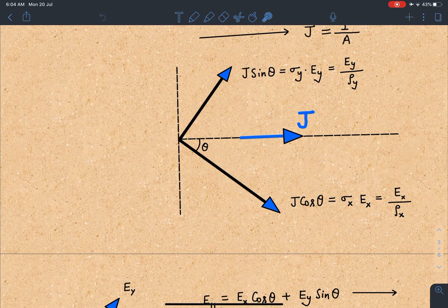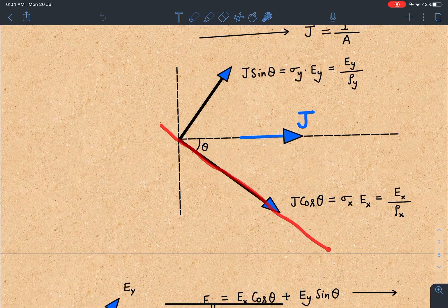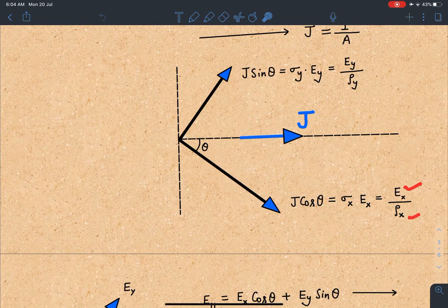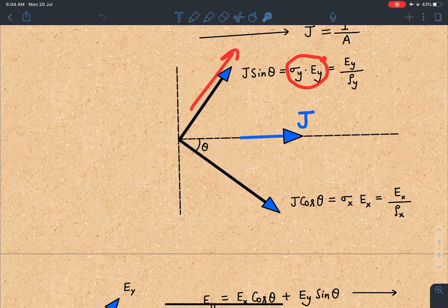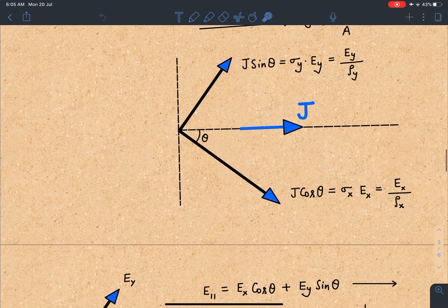Now that's where we can use our standard result J = σE. Since in this particular direction ρ is constant, I can still use that logic J = σE or E/ρ. So J cos θ = E_x/ρ_x, similarly I can write J sin θ = E_y/ρ_y. Please make sure you are taking components of J vector.